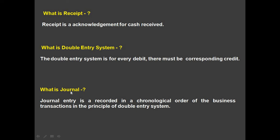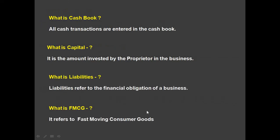What is a journal? A journal entry is recorded in chronological order of the business transaction on the principle of the double entry system. What is a cash book? All cash transactions are entered in the cash book.